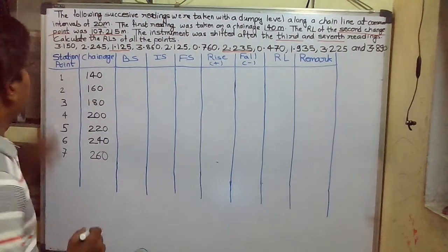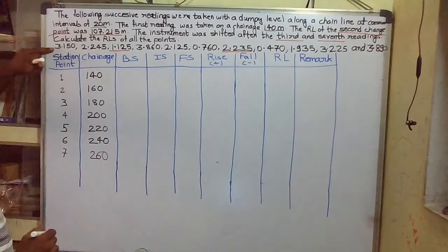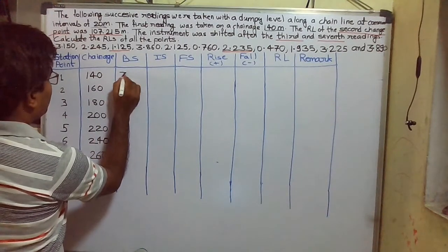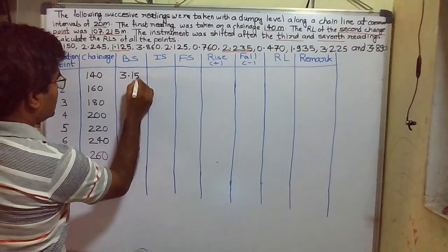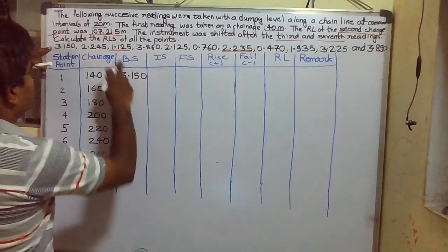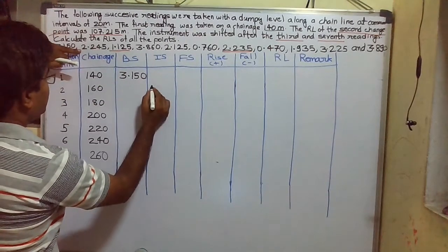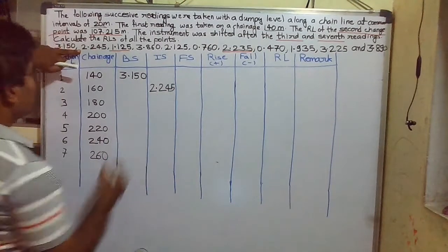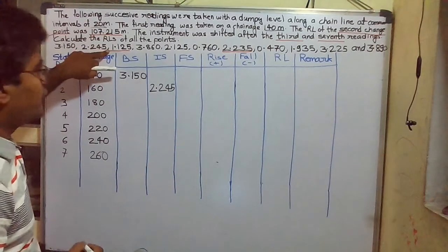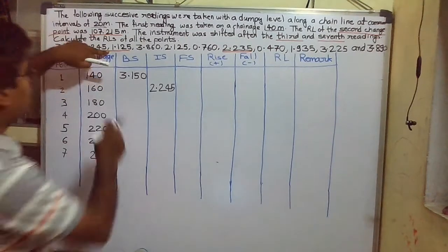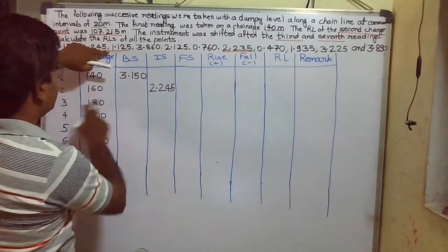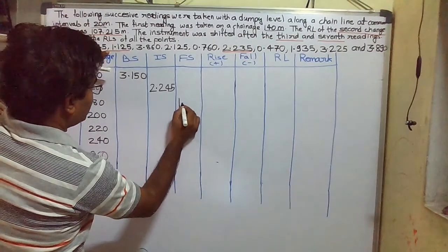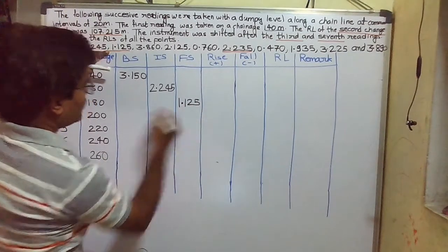Now let us write the readings. The first reading we always write in the back sight column — that is 3.150. Then the second reading goes in the intermediate sight column: 2.245. The third reading is a change point since the instrument is shifted after the third point, so we write 1.125 in the fore sight column.